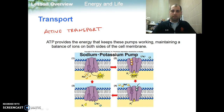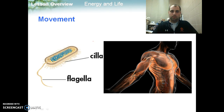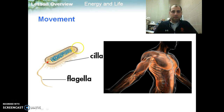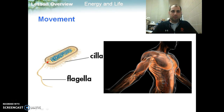In order to maintain homeostasis, we also have to have movement — whether it's moving the proteins at the base of a flagella to move a bacterium around, or to power and contract our own muscle cells, we're going to use ATP. So muscle movement is going to require ATP.